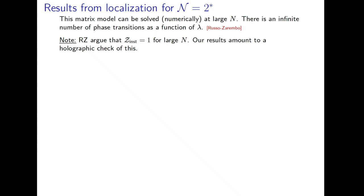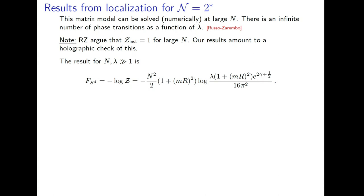Russo and Zarembo studied exactly this matrix model in the large-N limit as a function of the coupling lambda. Interesting things can happen as a function of this parameter. One of the arguments in their paper is that at large N instantons are not going to contribute, and calculations I'll show later give further holographic argument for this. I'm also interested in the dependence on lambda only in the large-lambda limit, because eventually I'd like to calculate in supergravity. As a function of lambda things are complicated and interesting — I encourage you to read those beautiful papers — but in this limit I have an analytic answer for the free energy on the four-sphere.